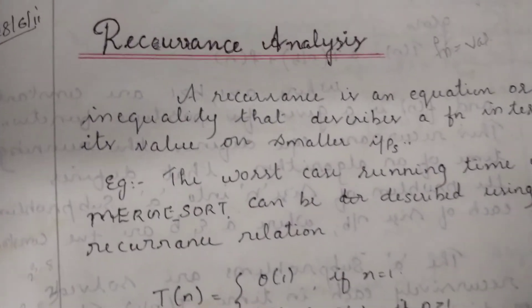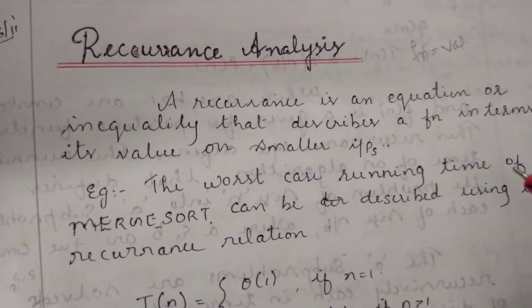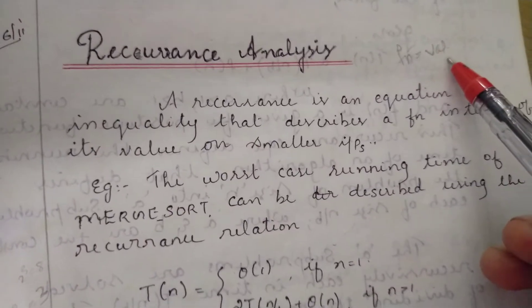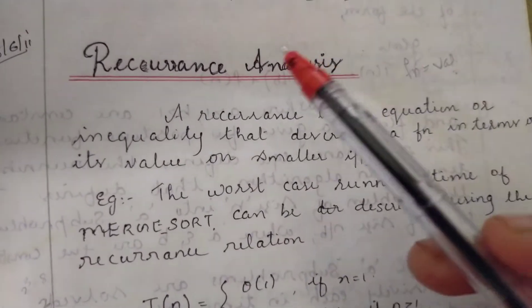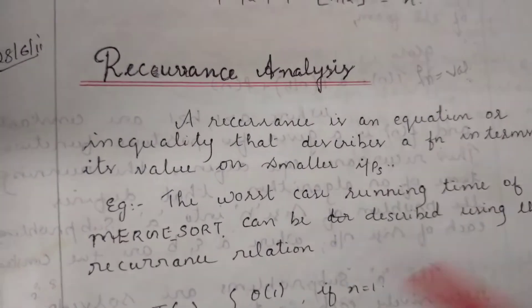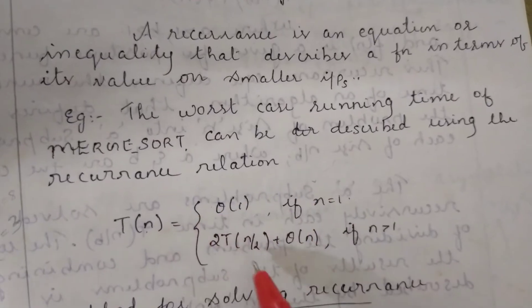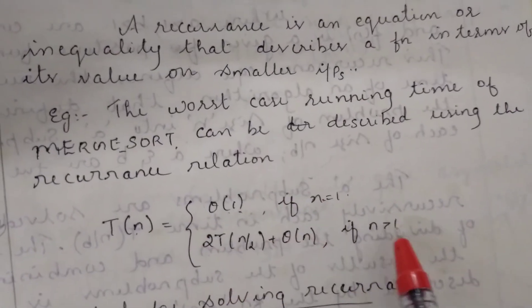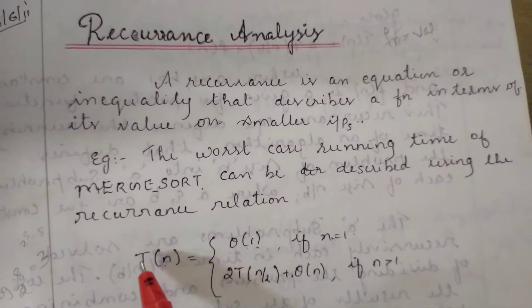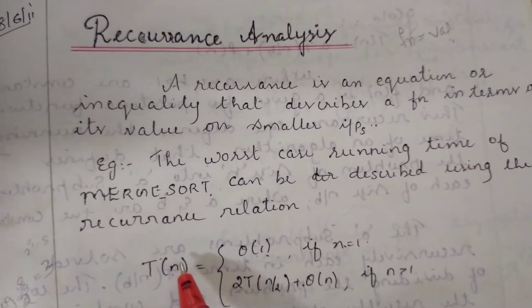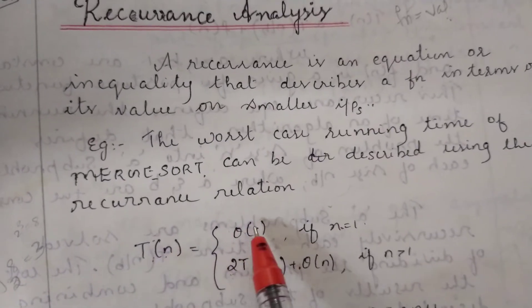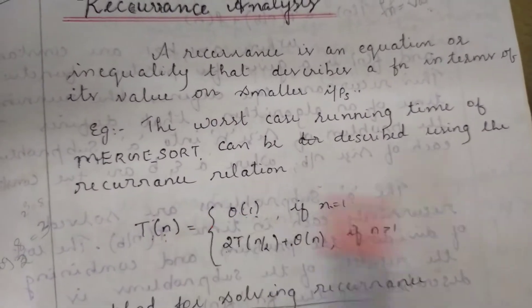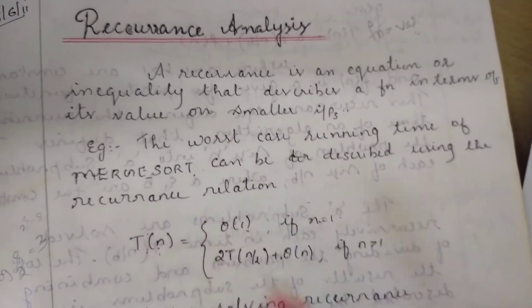The next topic is Recurrence Analysis. A recurrence is an equation or inequality where a function is defined in terms of its own value. Recurrence means we are describing a function in terms of its own value. For example, when n is 1, the function has a base value.